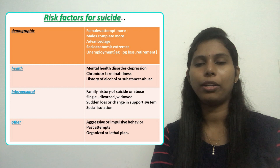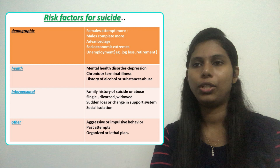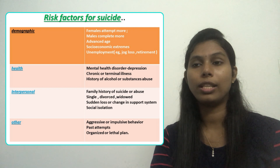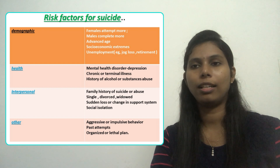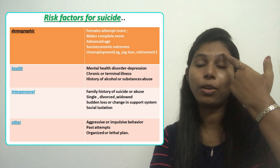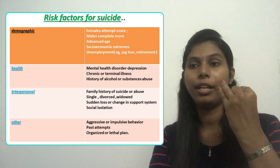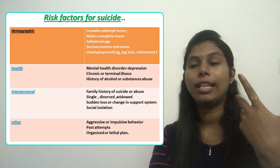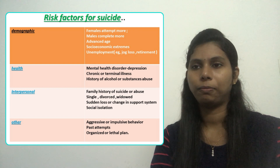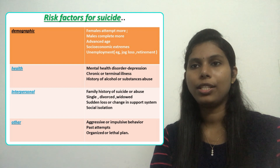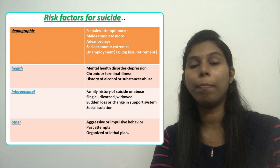The second group is health-related risk factors: mental health disorders like depression, chronic or terminal illness such as cancer, and history of alcohol or substance abuse. The third group is interpersonal risk factors: family history of suicide or abuse, being single or divorced, sudden loss or change in support systems, and social isolation.